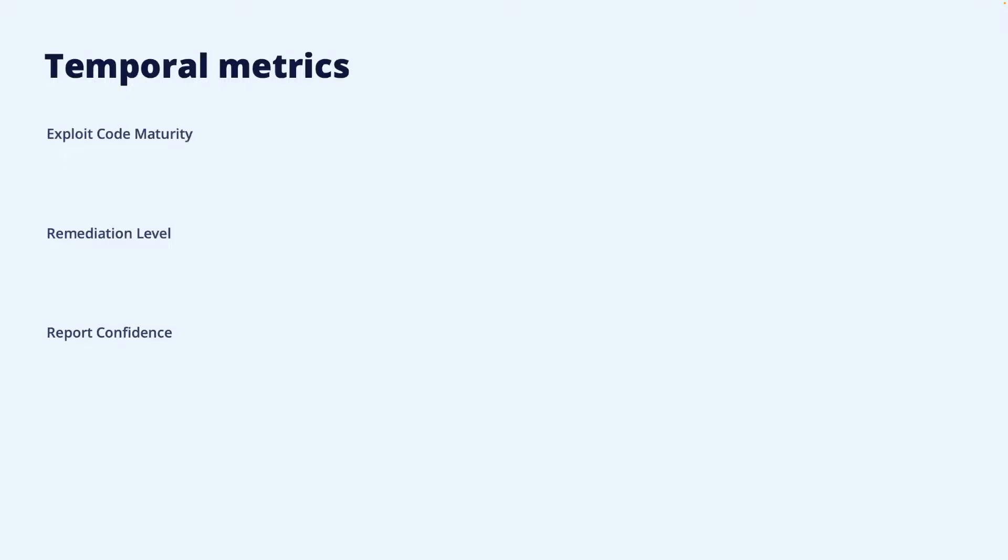That was the base score. The temporal CVSS score adds three metrics for the vulnerability that affect severity but are not assumed to be static over time. The first is exploit code maturity. Similar to the exploitability metrics in the base score, the more easily a vulnerability can be exploited, the more severe it is — and the availability of exploit code makes it more severe. The exploit code metric can range from unproven, meaning there is no exploit code (for example, if the vulnerability is just theoretical), to high, meaning the code is reliable, widely available, and easy to use.